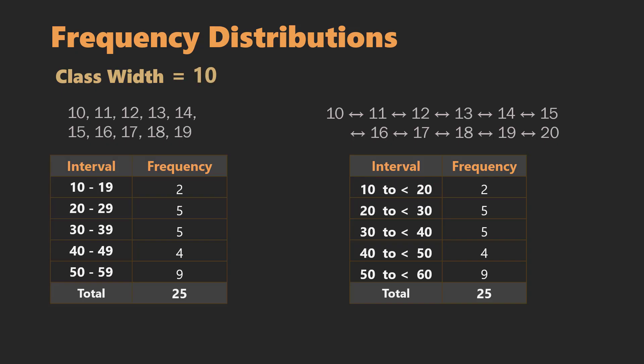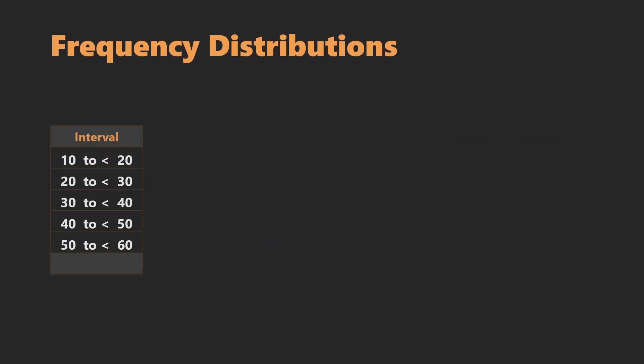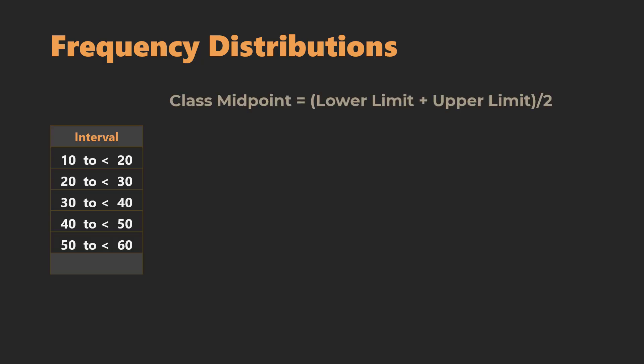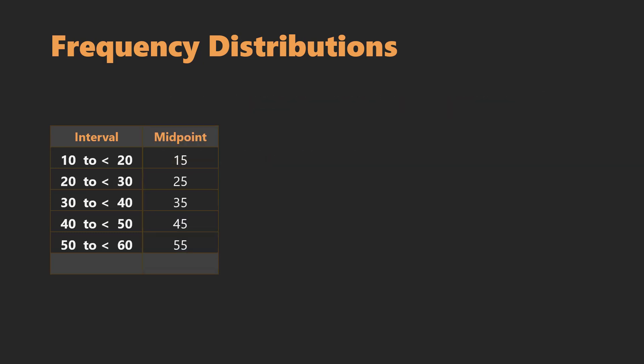We sometimes need to perform calculations on the class intervals that require choosing a representative from each interval. The best choice is usually the class midpoint, which can be found by taking the average of the lower and upper limit for each class interval. For the first class interval, the midpoint is found by taking 10 plus 20 and dividing by 2, which gives 15. We obtain the other midpoints respectively.